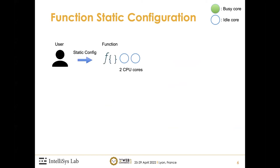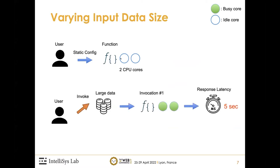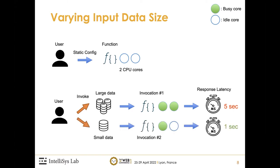Existing serverless platforms typically allow users to pre-configure a static resource allocation limit when deploying their code. However, actual resource usage is input-data dependent. In our example, the green circle represents a busy CPU core and the white circle represents an idle CPU core. When a user passes a large size of input data, the invocation can reach full utilization of two cores, resulting in five seconds of execution time. With a small input, the function uses only one core, resulting in one second of execution time.